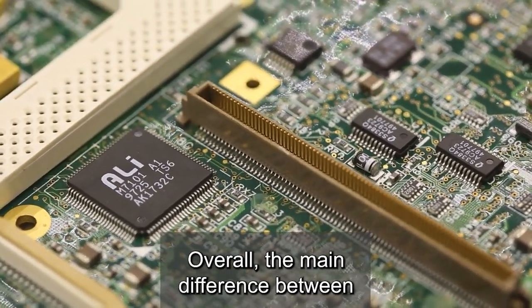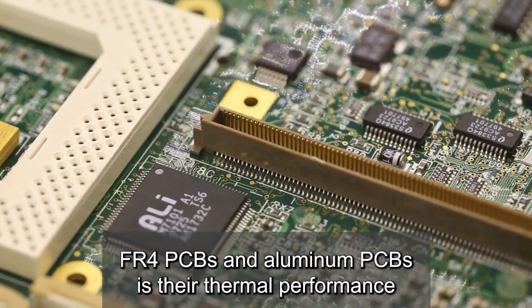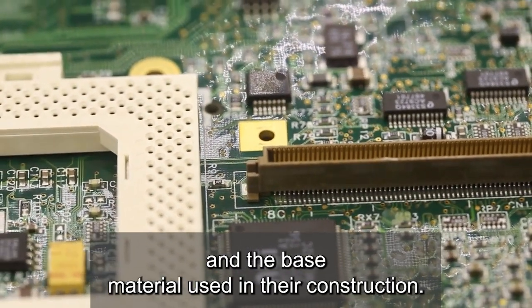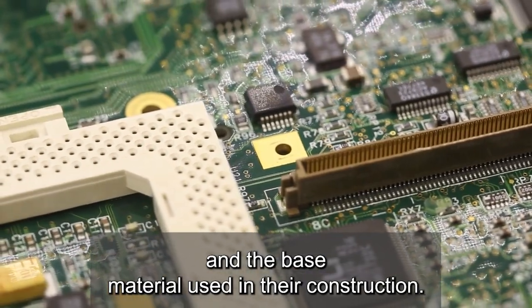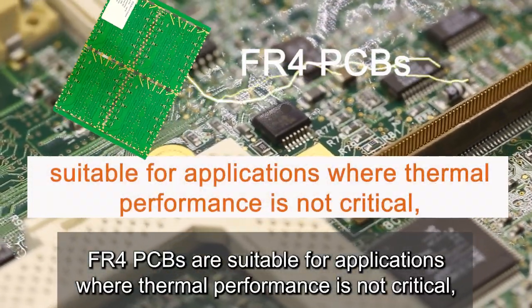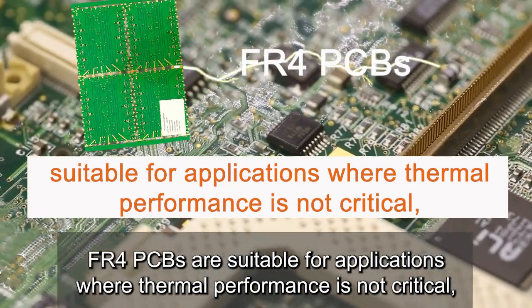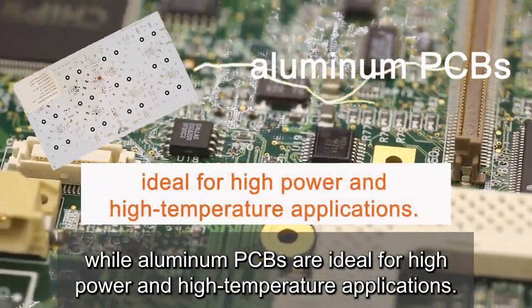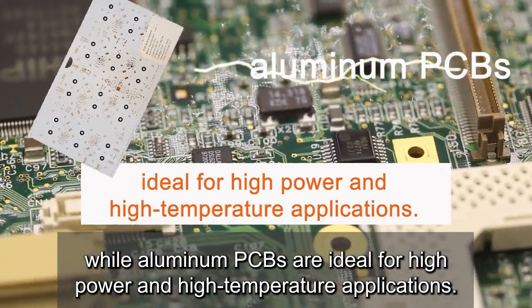Overall, the main difference between FR4 PCBs and aluminum PCBs is their thermal performance and the base material used in their construction. FR4 PCBs are suitable for applications where thermal performance is not critical, while aluminum PCBs are ideal for high power and high temperature applications.